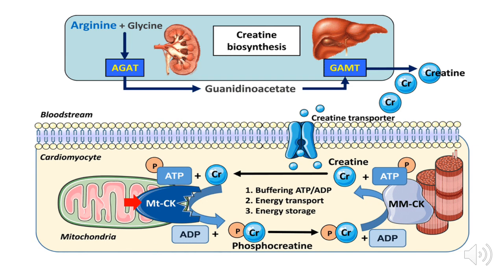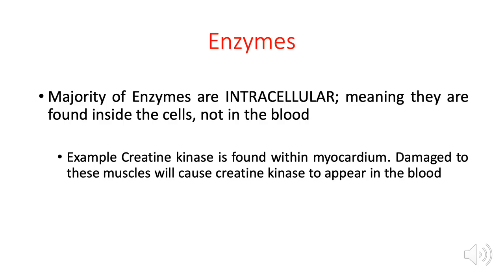Creatine kinase should be found within the cardiac muscles. In cases where the cardiac muscles die — for example, when a patient has acute myocardial infarction — those cells will undergo lysis and creatine kinase will be released into the blood. The presence of high creatine kinase in the blood suggests ongoing lysis of cardiac muscles and indicates the patient could be having acute myocardial infarction or heart attack. Majority of enzymes in the body are intracellular, so cellular trauma or injury causes lysis and leakage of these enzymes into the blood, signifying cellular damage.